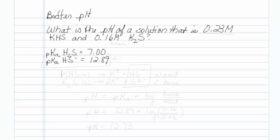Okay, let's investigate what we actually have. KHS is going to give us, in solution when it dissolves, K+ and HS-. K2S, when it dissolves, is going to give us two potassiums and a sulfide 2-.